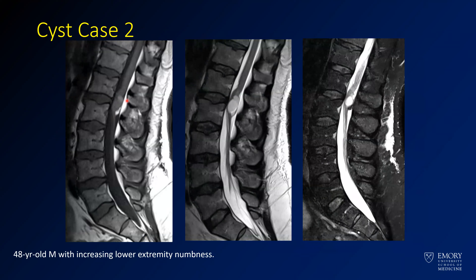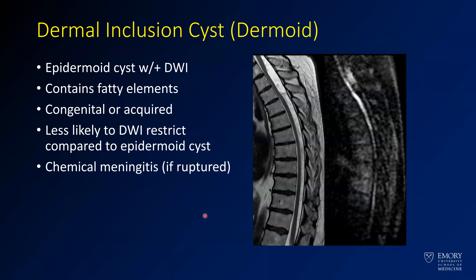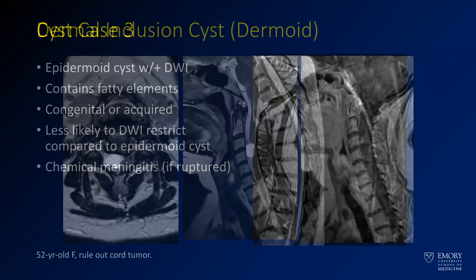Here's another cystic lesion of the conus in a patient with lower extremity symptoms. There's a little T1 bright material, predominantly cystic, with a little T2 siderosis perhaps — this is a dermoid. Dermoids tend to look cystic and can mimic arachnoid cysts, but often have some fatty elements. They don't have as much diffusion restriction as an epidermoid, so they're not very DWI bright. They can cause chemical meningitis if they rupture.